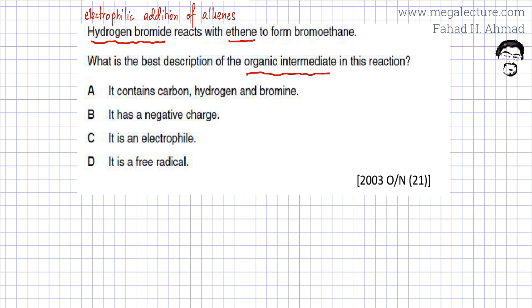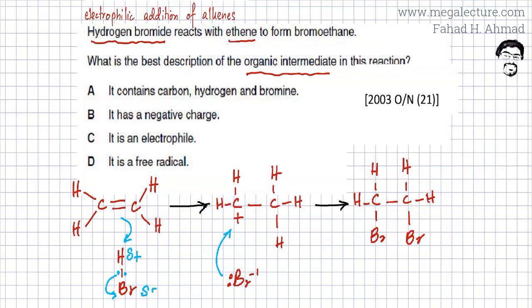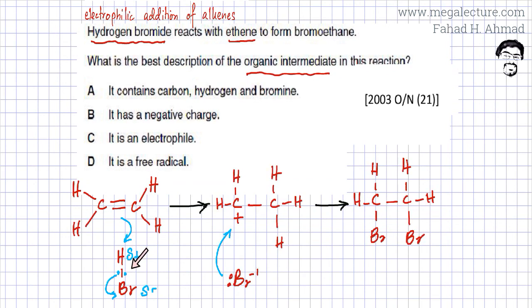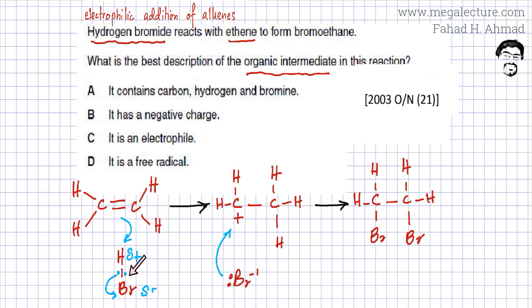I'm going to write down the reaction mechanism first. This here is the reaction mechanism. You can see an alkene — ethene molecule specifically. There's a double bond, a pi-electron cloud over here. These electrons are going to repel the electrons in the HBr molecule, this HBr bond. These electrons are going to get repelled, which will increase the partial negative charge on bromine because these electrons are going to be closer, repelled further towards bromine.